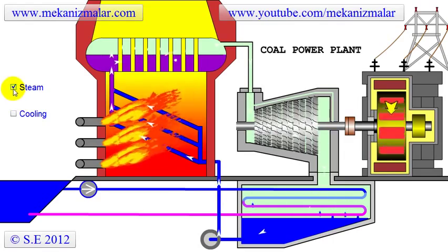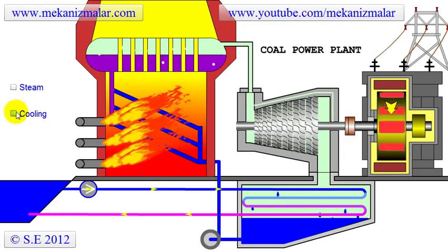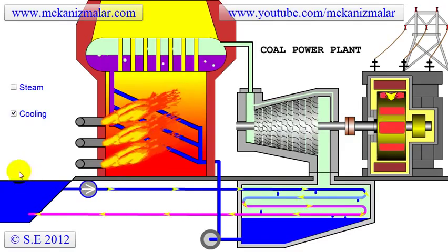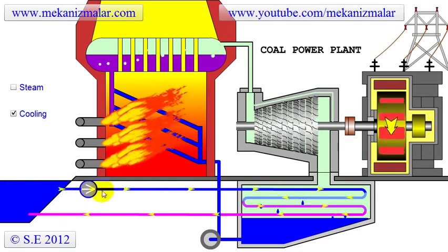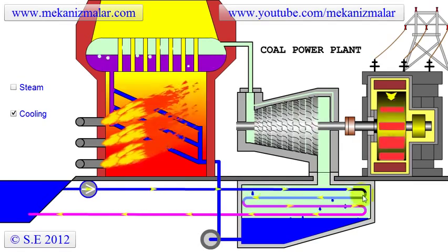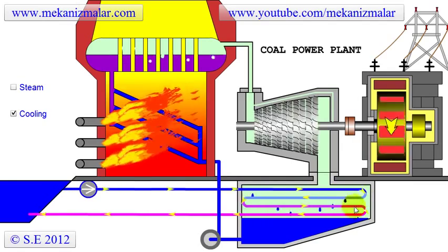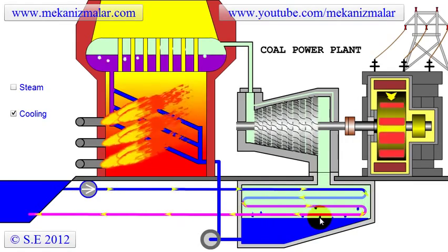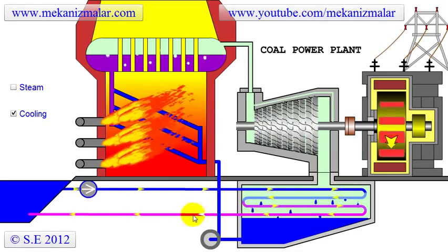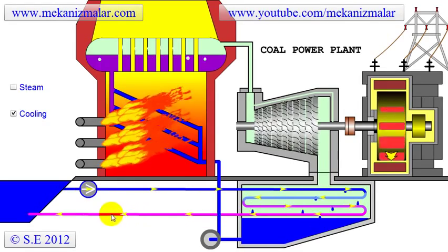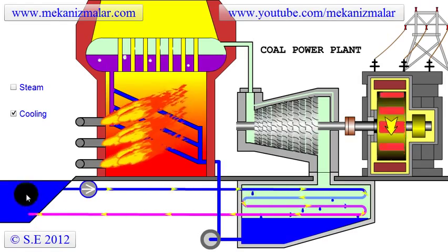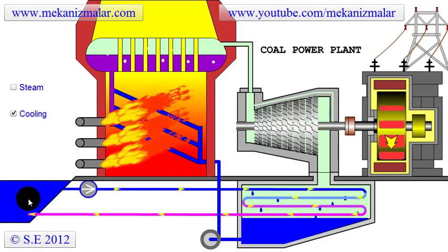Now let's discuss the second cycle — the open-loop cooling cycle — which starts by pumping cold water from the upstream section of the river into the condenser inside the steel tubes. While saturated steam is condensed to water, the water from the river is heated. The heated water is then dispensed to the downstream section of the river.